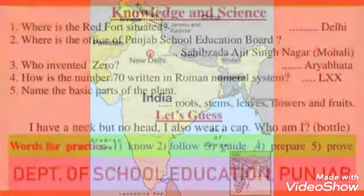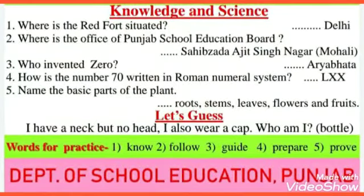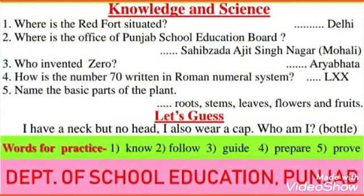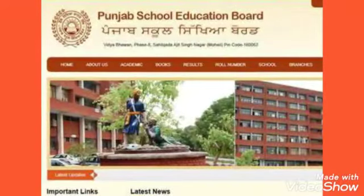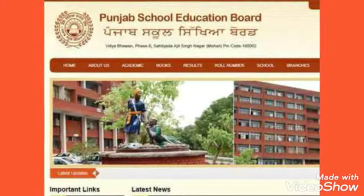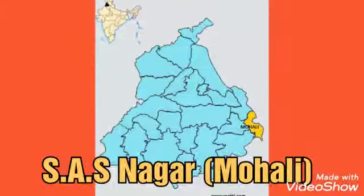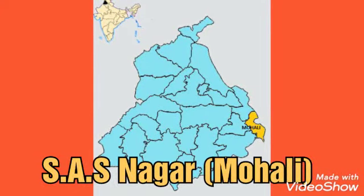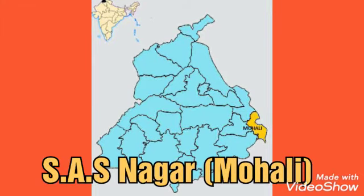Question 2: Where is the Office of Punjab School Education Board? The answer is Sahib Zadda Ajit Singh Nagar, Mohali. You can see here the Office of the Punjab School Education Board. It is situated in Mohali District of Punjab. The Mohali District is also called SAS Nagar, meaning Sahib Zadda Ajit Singh Nagar, and here you can see the location of SAS Nagar on the map of Punjab.